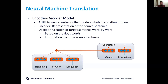The nice thing is that this is one large artificial neural network that models the whole translation process. We have one big model trying to do the full translation. The encoder takes the words in the source language and learns a representation for them.